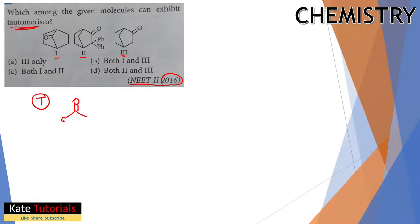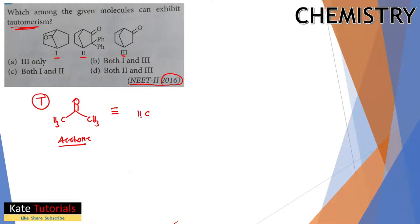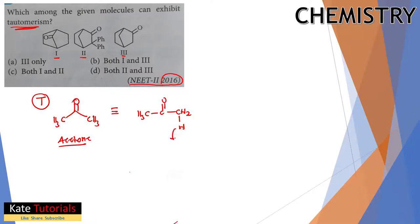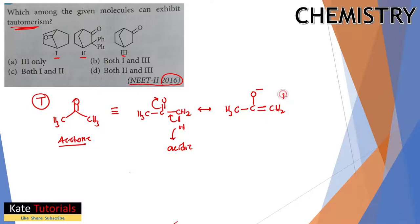Tautomerism can be understood using acetone as an example. Acetone is a ketone: CH3-C(=O)-CH3. We can write it with CH2 instead, where one alpha hydrogen is present. This hydrogen is acidic. It is acidic because if I remove this hydrogen, the electron density shifts and the bond rearranges.